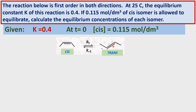This is the isomerization reaction: CIS is converted into trans. This is an equilibrium reaction. The forward rate constant is K1 and the reverse rate constant is K minus 1.